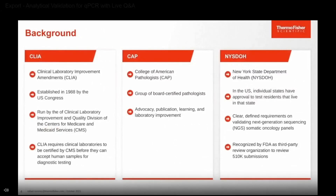Let's talk about different accrediting organizations. We'll start with CLIA first. CLIA is the Clinical Laboratory Improvement Amendment. It was established by Congress in 1988. It is the Centers for Medicare and Medicaid Services, also known as CMS. CLIA requires clinical laboratories to be certified by CMS prior to accepting any human samples for diagnostic testing.